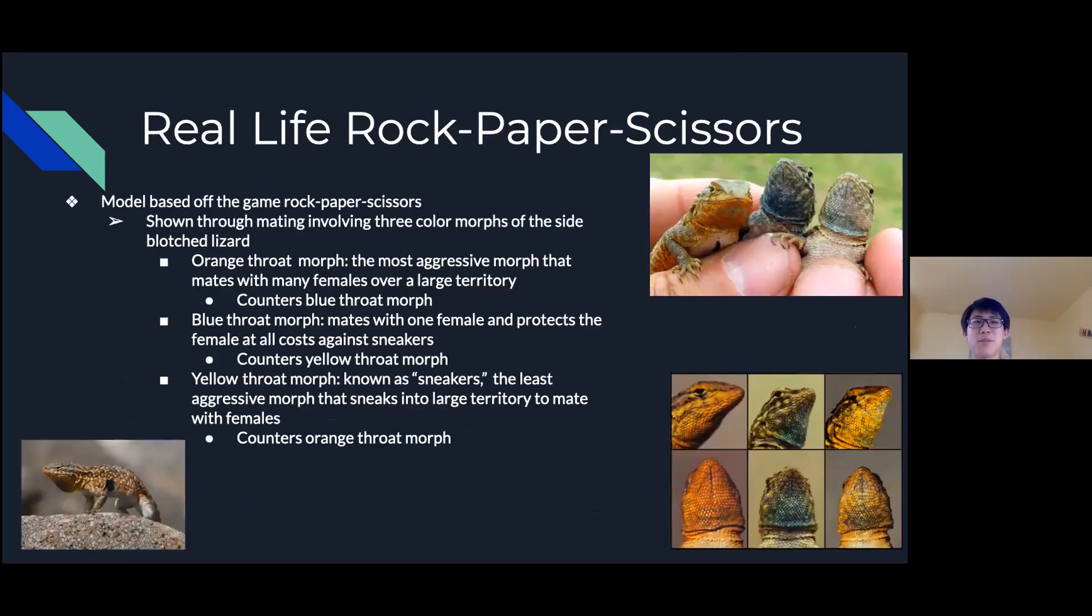There's a model based off rock paper scissors shown through three color morphs of the side-blotched lizard. The orange throat morph is the most aggressive morph that mates with many females over a large territory. A blue throat morph mates with one female and protects that female at all costs against sneakers. The yellow throat morph is known as the sneaker and it's the least aggressive morph that sneaks into large territory to mate with females. The orange counters the blue, the blue counters the yellow, and the yellow counters the orange. It's basically a real life example of rock paper scissors.